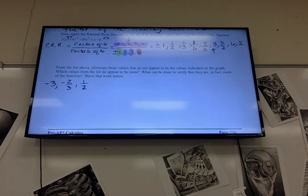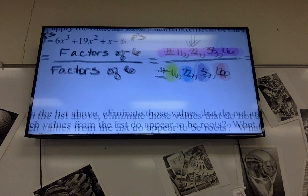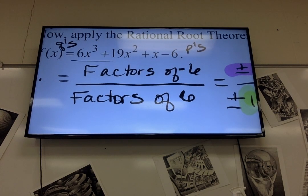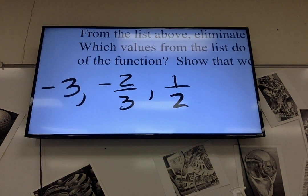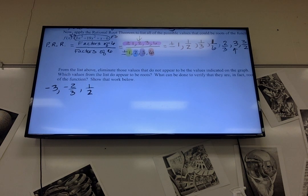What we can do is we can divide that original equation, which is right here. We can divide that original equation by the root negative 3. If it is an actual root, which we are pretty sure about that one, but if it is, what will my remainder be? Zero.